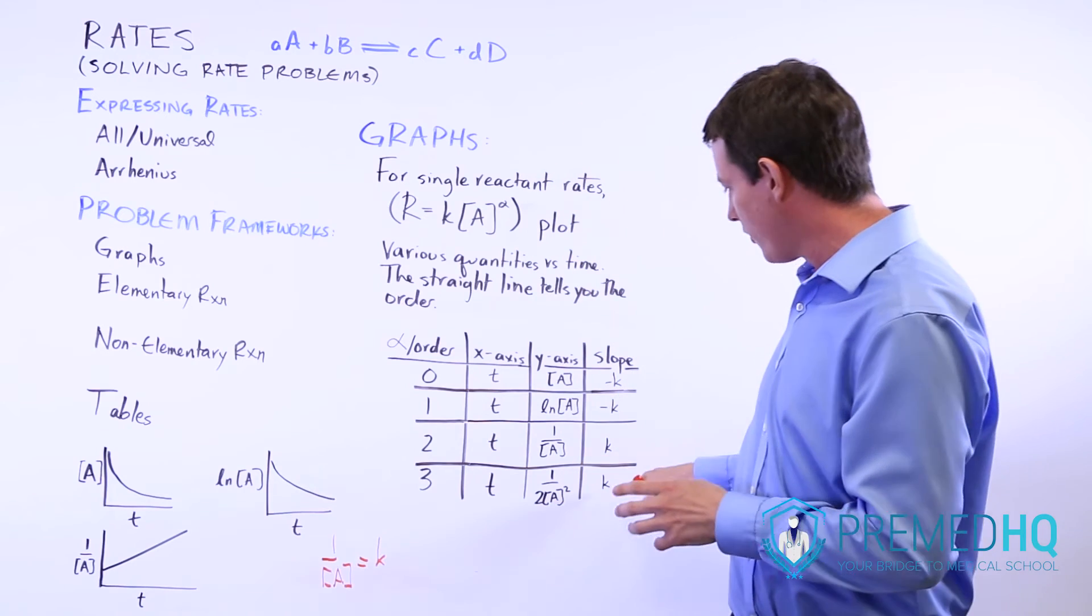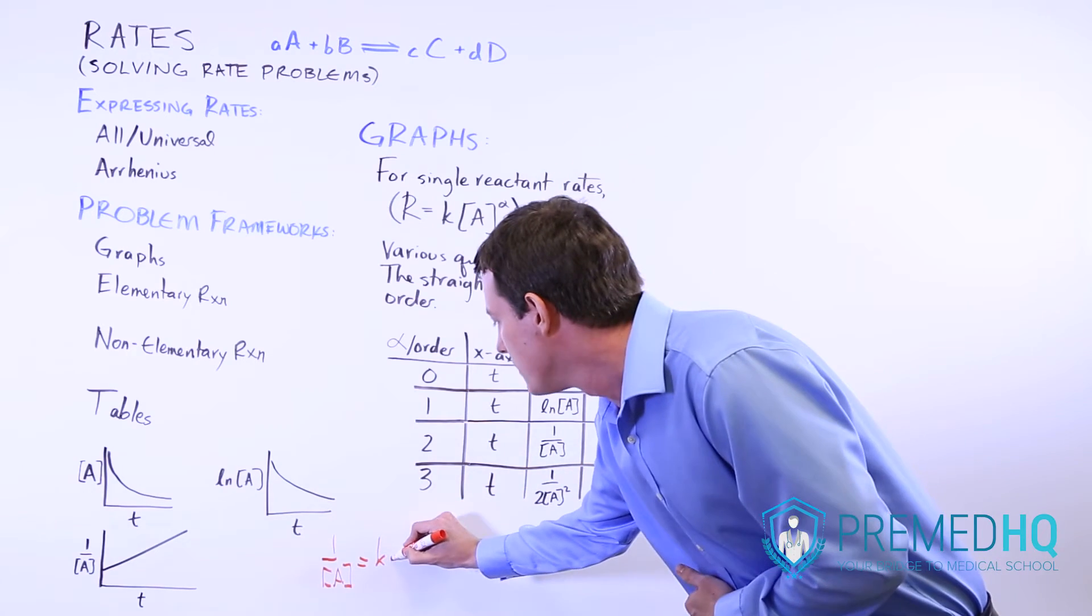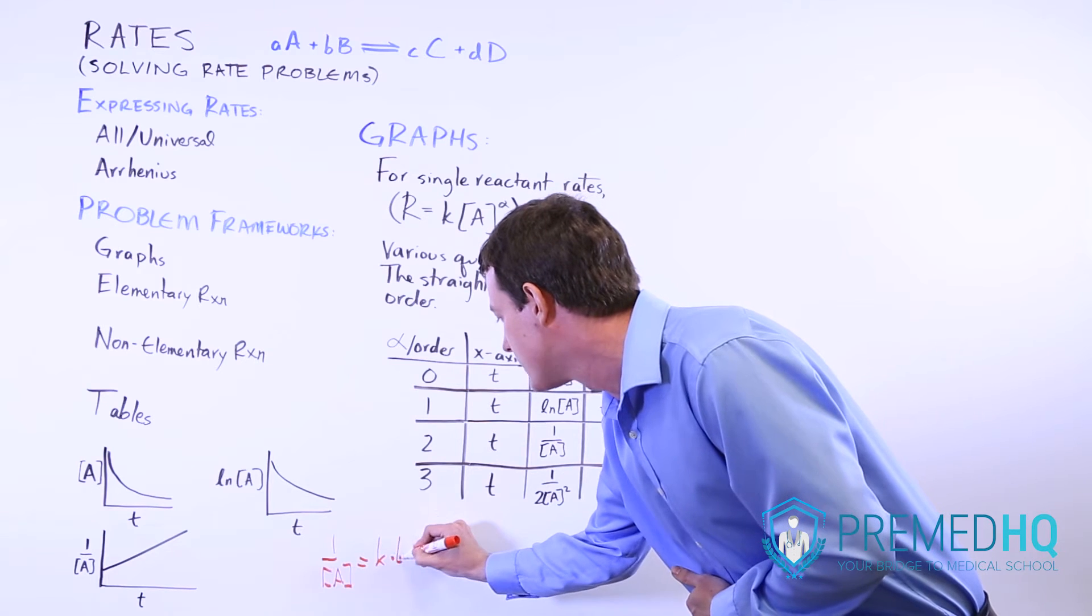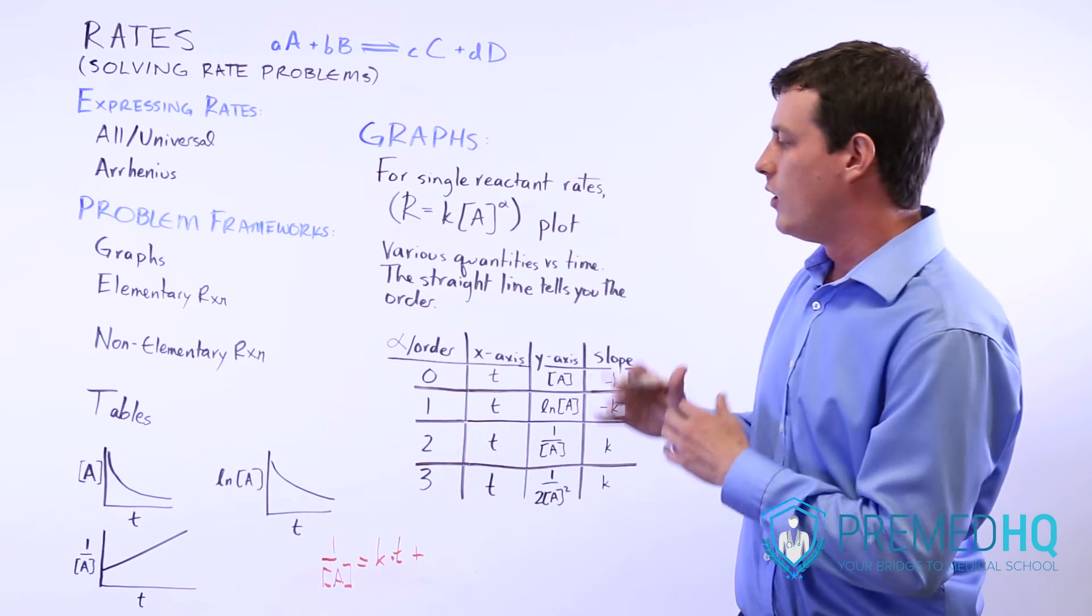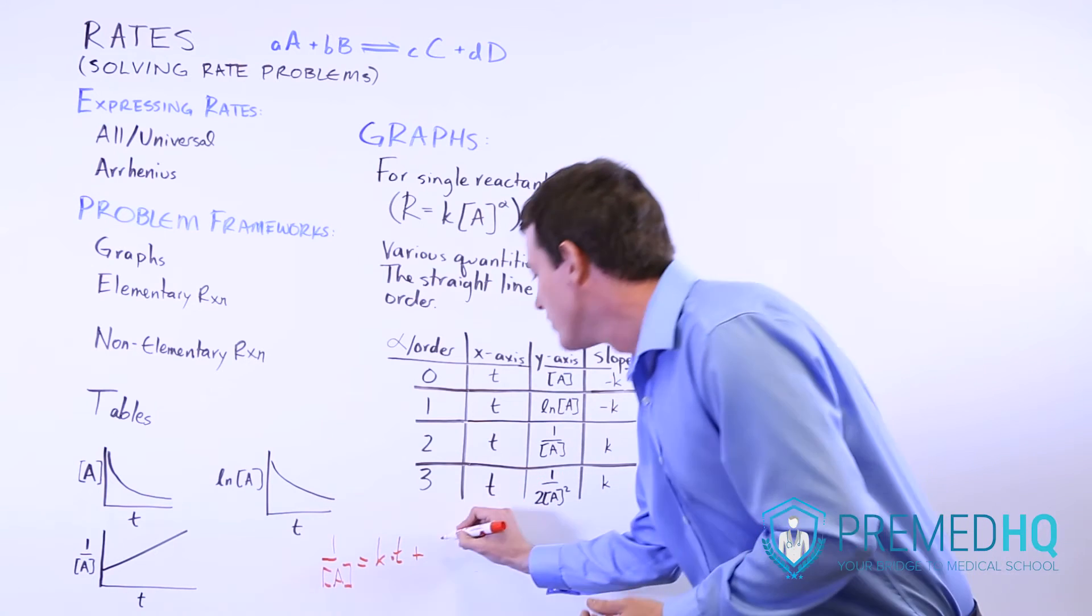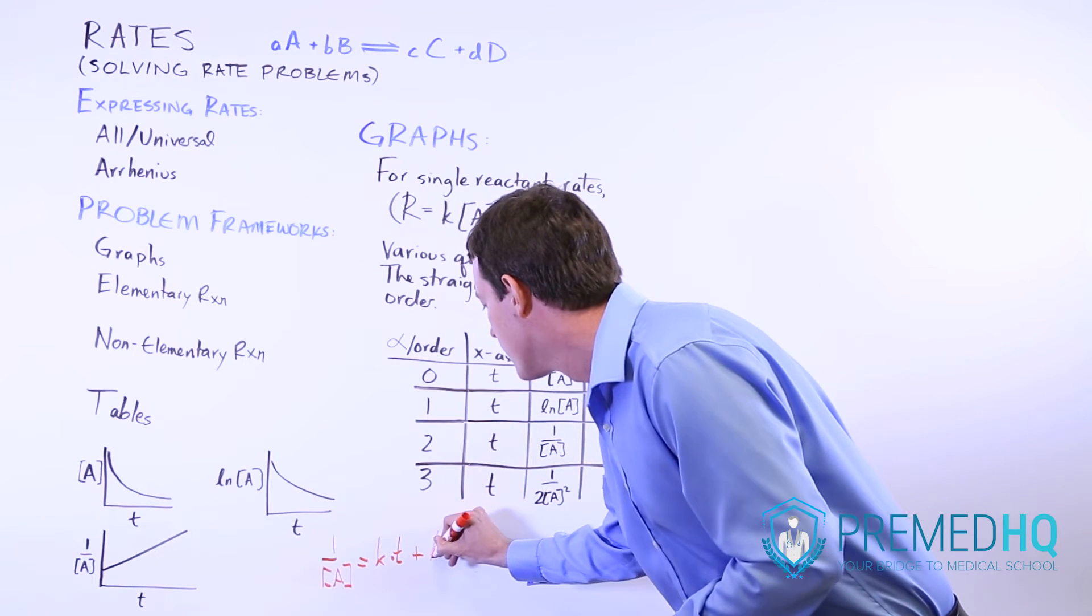And that's going to equal the slope, which is k, we've already established that the slope is going to be k, times the x-axis value, which is time, plus some sort of y-intercept, whatever the y-intercept is. And we'll just call that b here.